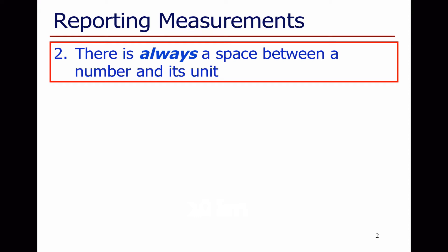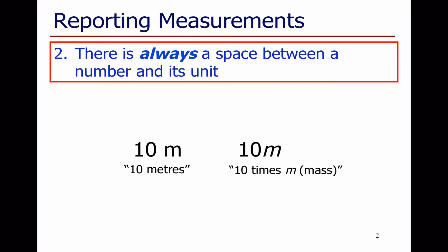When writing a measurement, there should always be a space between the number and its unit. '10 m' with a space means 10 metres, but '10m' with no space could just mean 10 times the mass, because we use m for mass. So always try to put a space in between the measurement and its unit.